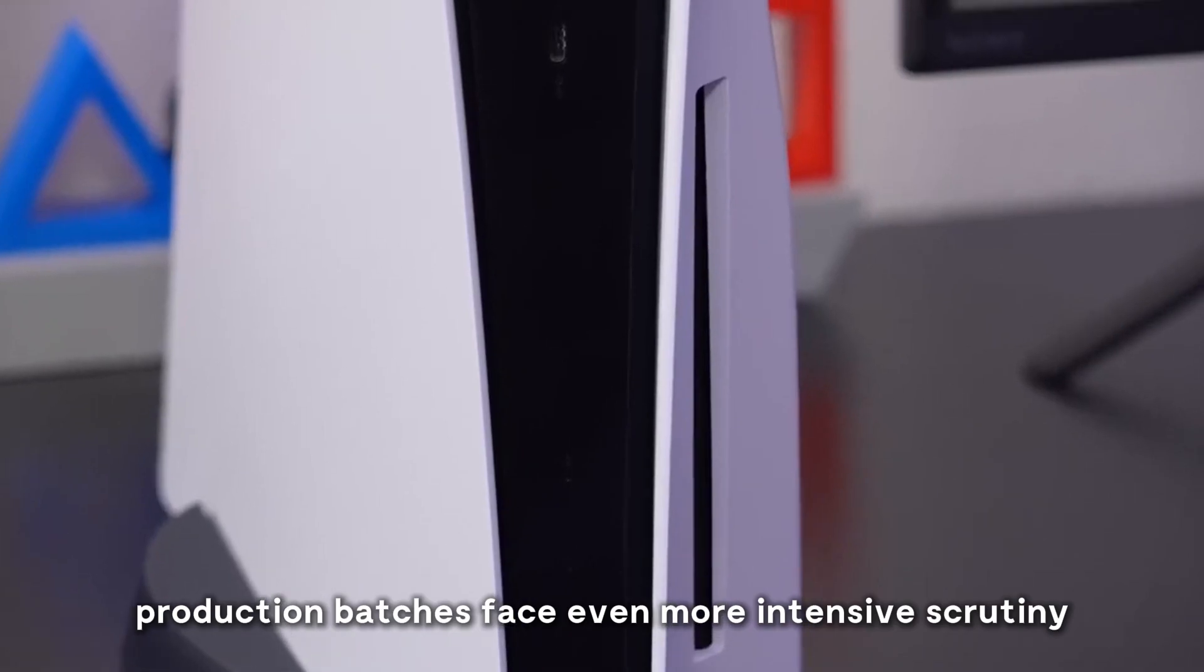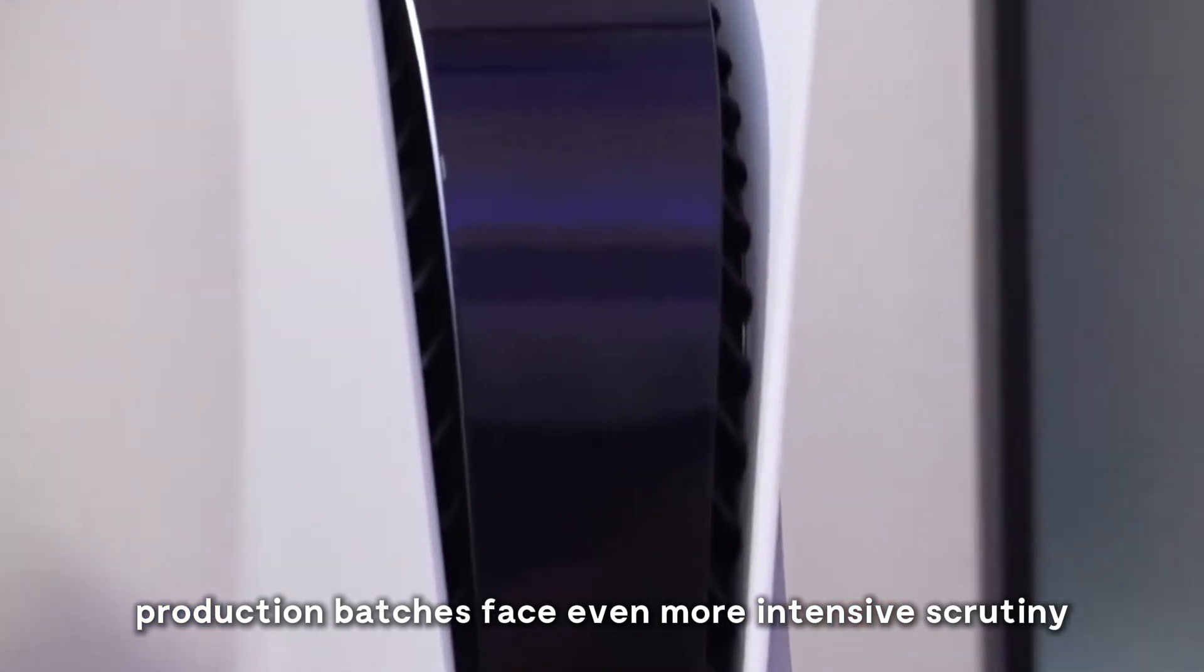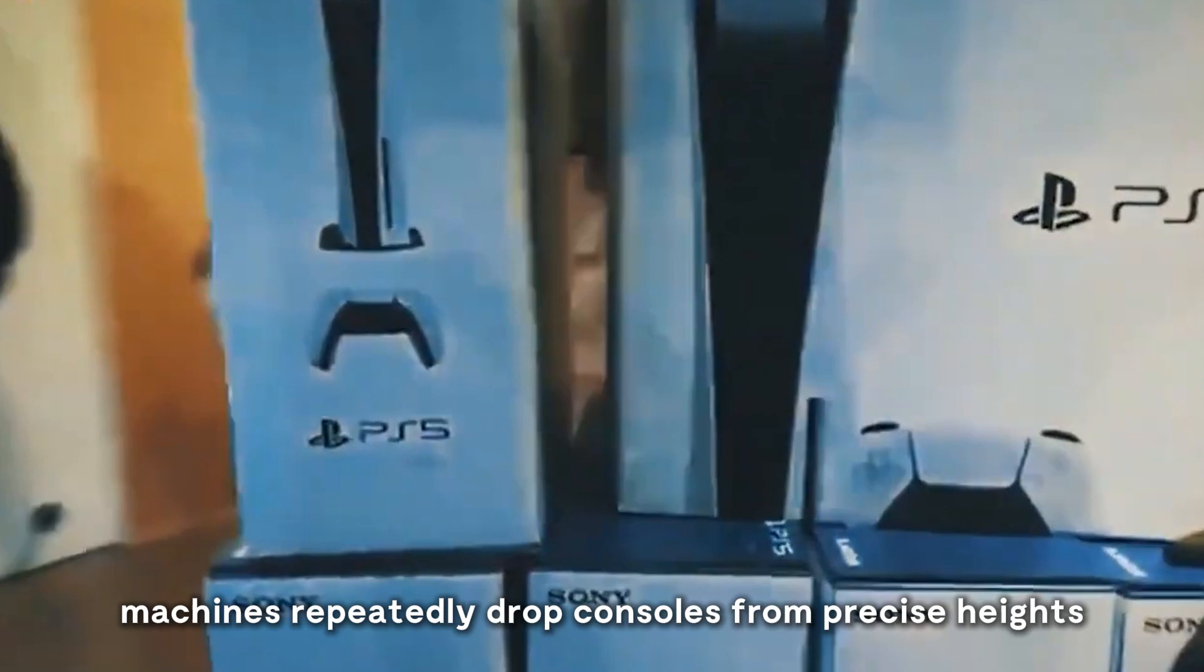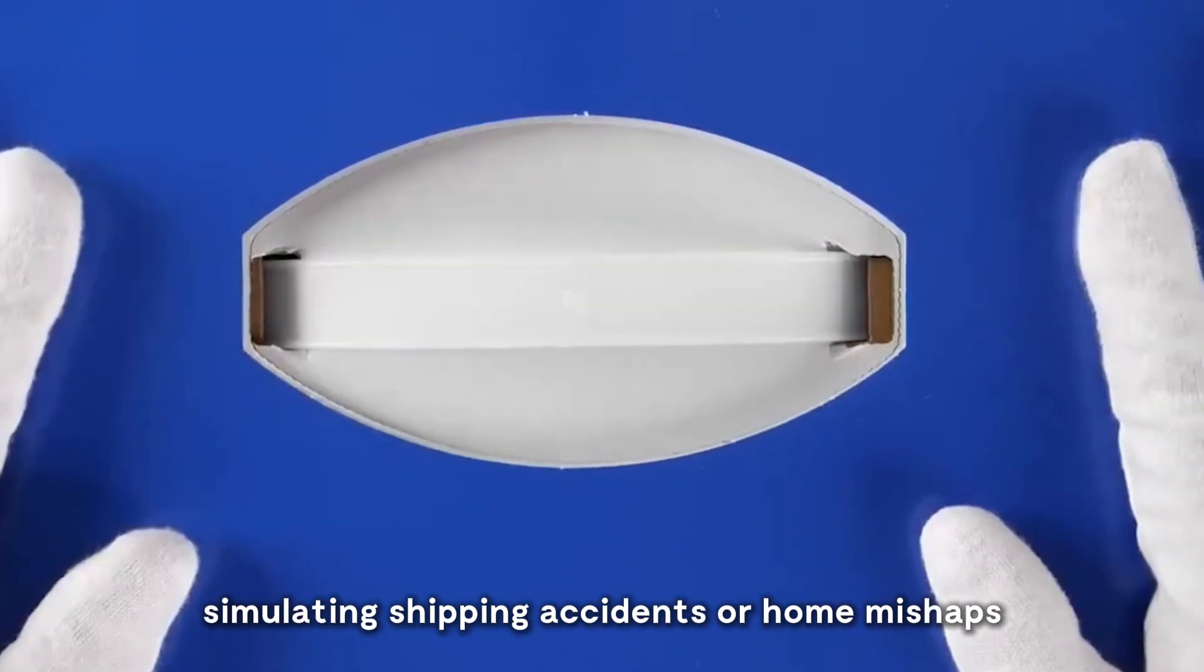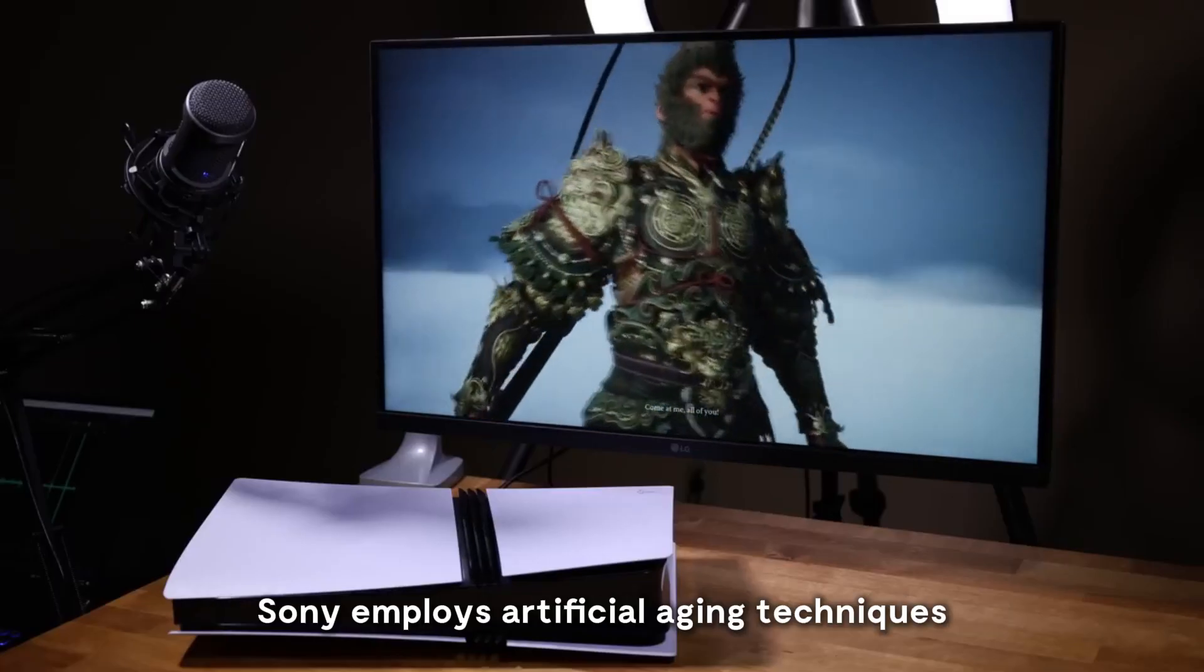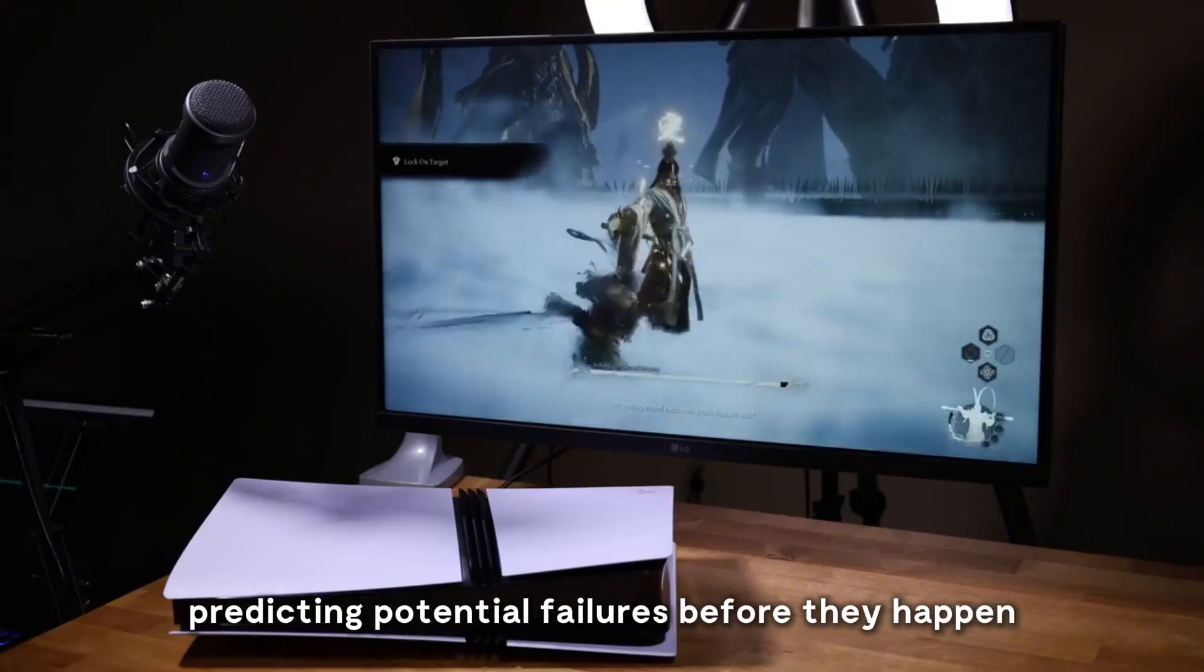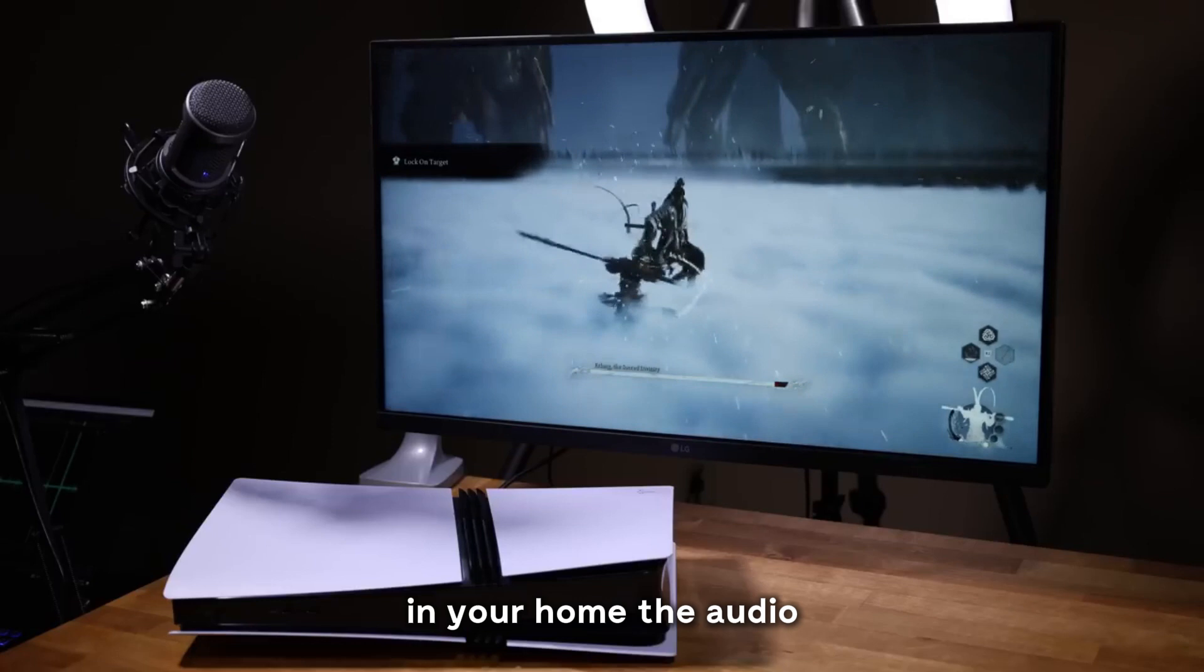Random samples from production batches face even more intensive scrutiny. Machines repeatedly drop consoles from precise heights, simulating shipping accidents or home mishaps. Sony employs artificial aging techniques that replicate years of operation, predicting potential failures before they happen in your home.